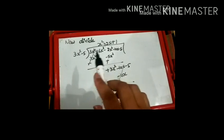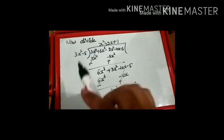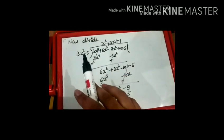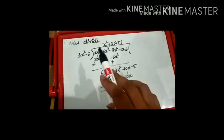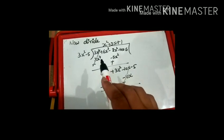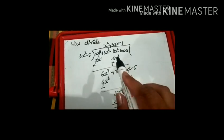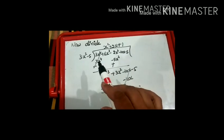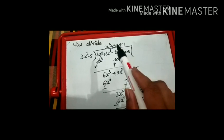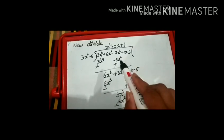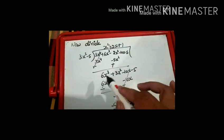Now we divide. We place p(x) inside and 3x² - 5 outside (keeping the 1/3 constant factor aside). The first term of p(x) is 3x⁴ and the divisor's first term is 3x². To get 3x⁴, we multiply by x². So 3x² × x² = 3x⁴. Then multiply x² by -5 to get -5x², which we write under the x² term. Sign changes: plus to minus. We bring down 6x³ and the term -2x² + 5x² gives +3x². We also bring down -10x and -5.